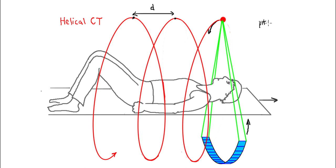The relevant parameter here is called pitch, p. It's the distance d in one rotation divided by s, the slice thickness. A typical value might be one — for example, a distance of 1.5 millimeters for a slice thickness of 1.5 millimeters. The spiral I've drawn in the cartoon is much too loose, but it's just to illustrate.